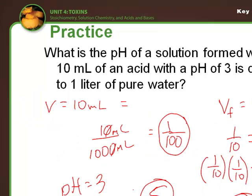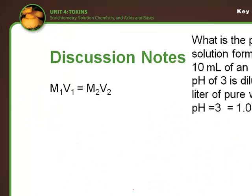So another way of approaching this problem is using the M1V1 equation. To do this, you've got 10 milliliters of an acid. So that's going to be our initial volume. The molarity of the acid has a pH of 3, so the molarity is 10 to the negative 3. This will equal the molarity, which we do not know, of the diluted sample, times the volume, which is 1,000 liters.